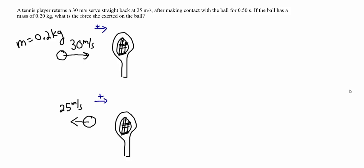In this first problem we have a tennis ball with a mass of 0.2 kilograms moving to the right in the positive x direction at 30 meters per second. It hits a tennis racket and bounces back to the left at 25 meters per second. The ball was in contact with the racket for 0.5 seconds, and we're going to use that to find the force that the racket exerted on the tennis ball.